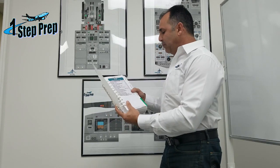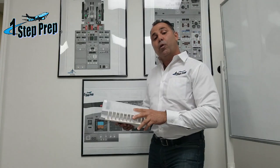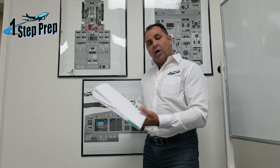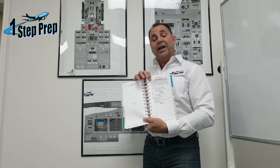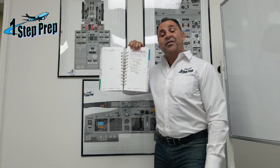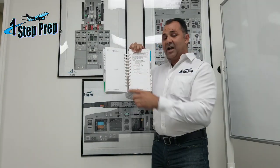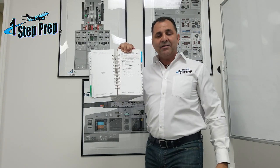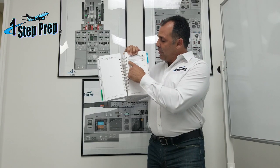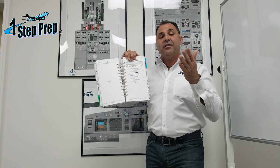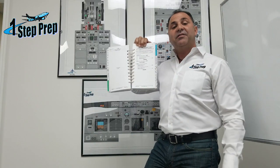Let's go to an example — abort engine start, 7.1. If you go to 7.1 in the QRH, when abort engine start, you're going to see here that we're going to have dash lines. All these dash lines here — anything above the dash lines means that's a memory item. Only the numbers above the dash lines — any number above the dash lines means it's a memory item.